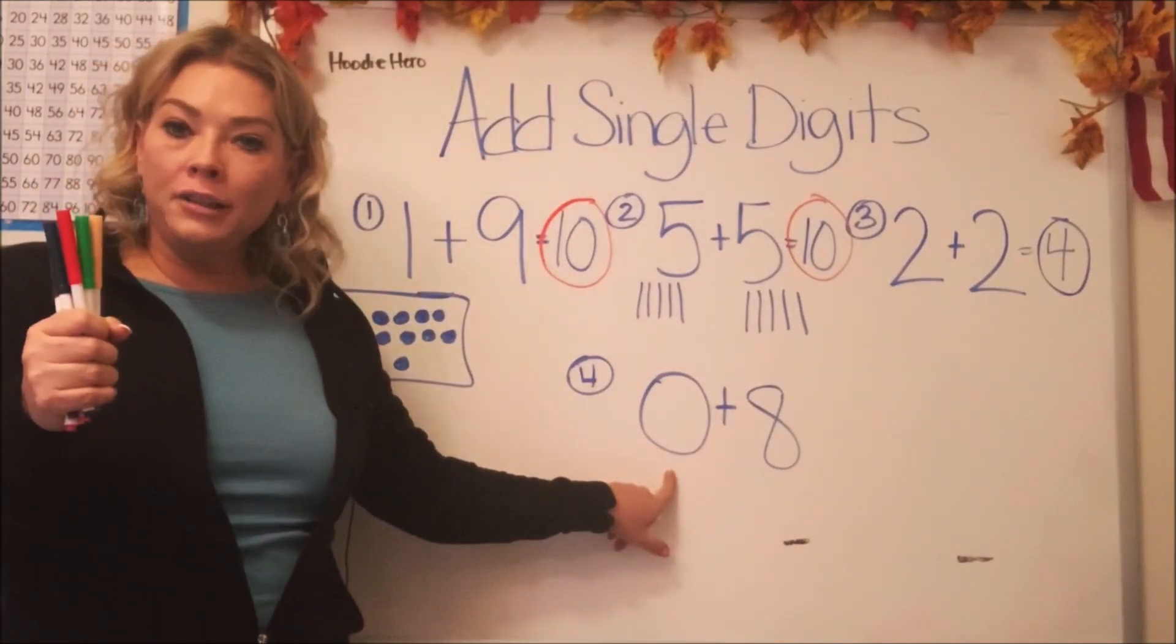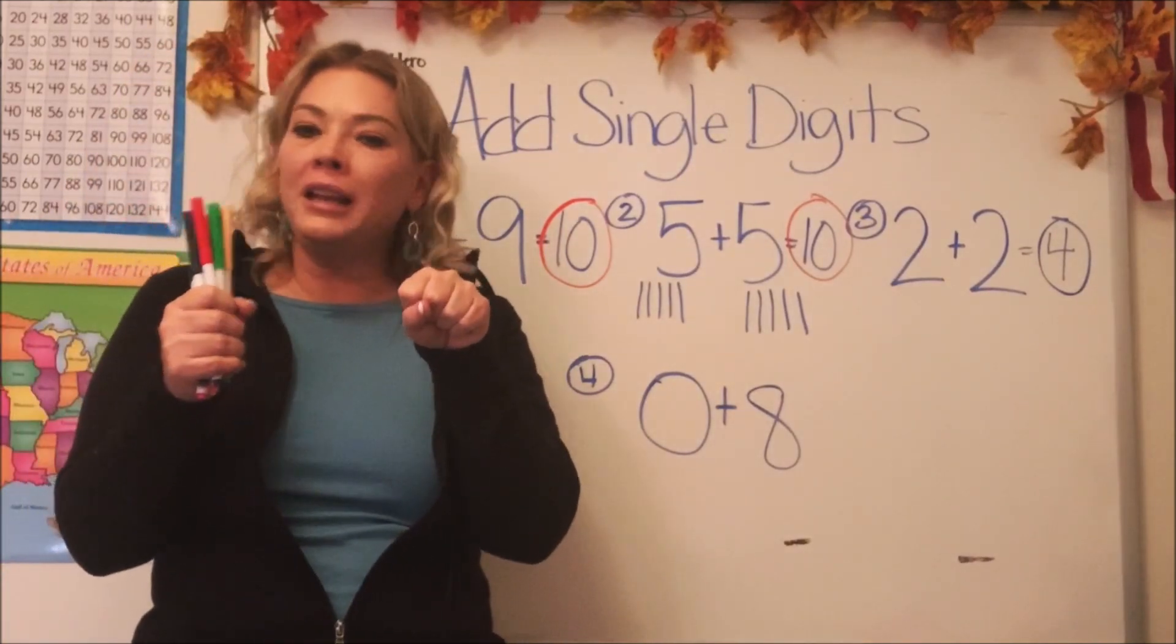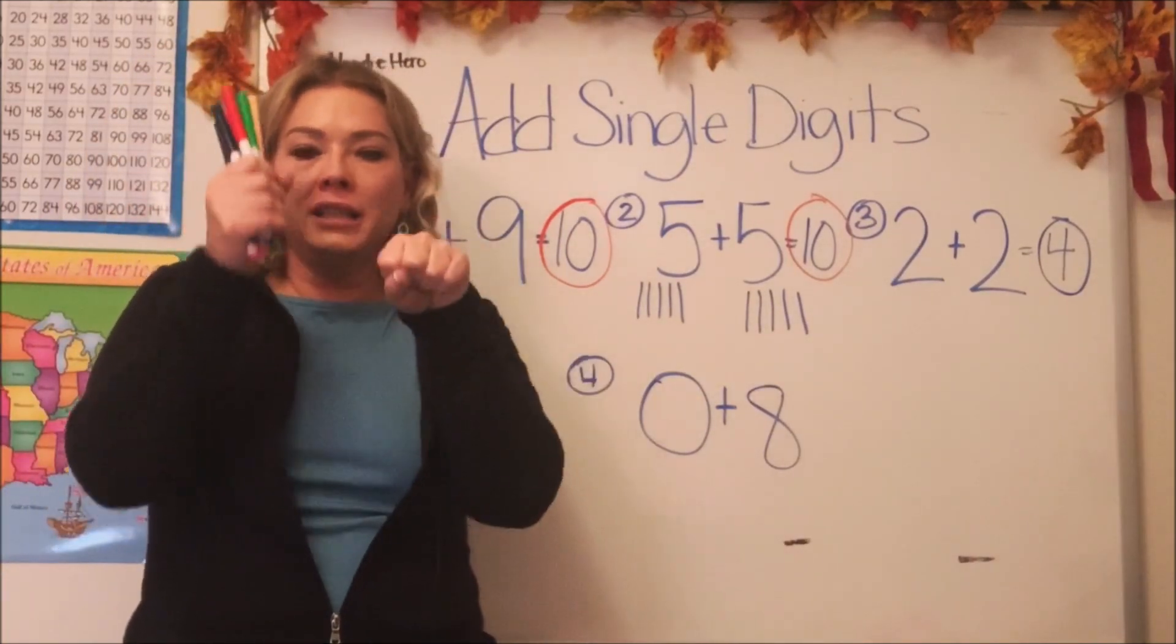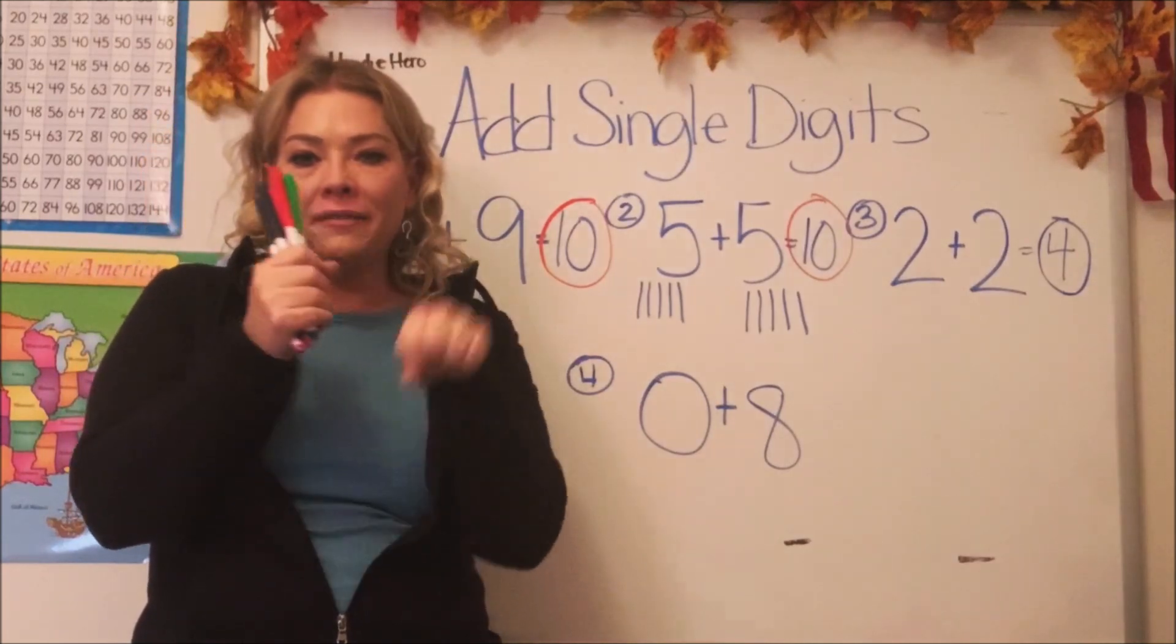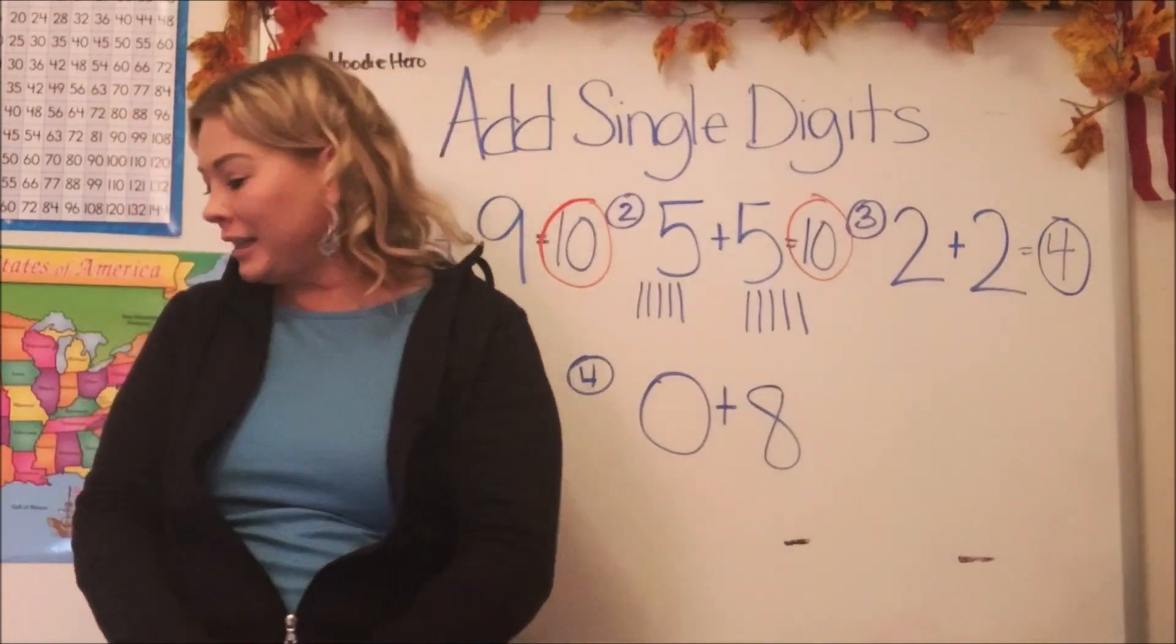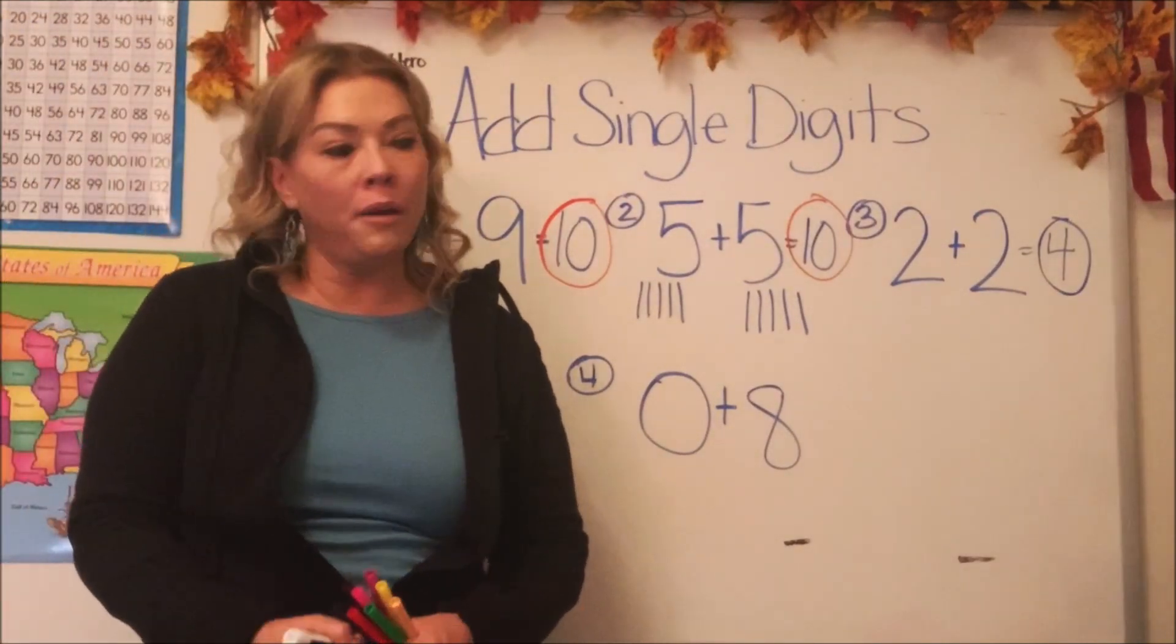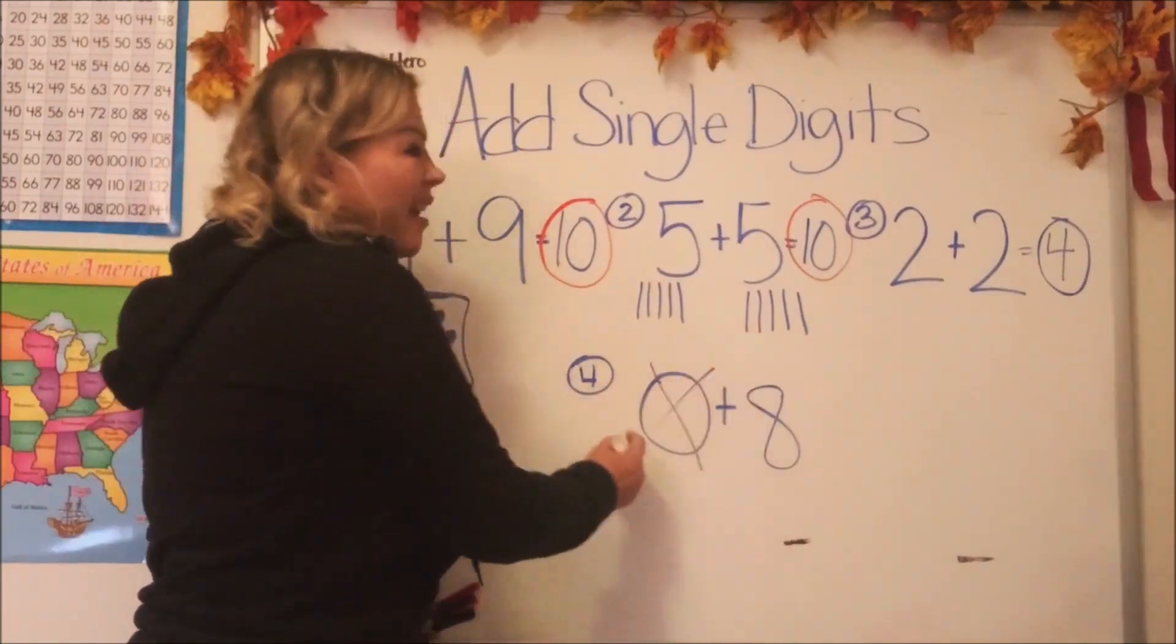And how much are we going to add to it? We're adding zero. We're not adding anything to it. So what's zero plus eight? If I didn't add, if I added a big zero to it, what is my answer going to be? It's going to be the eight, isn't it?